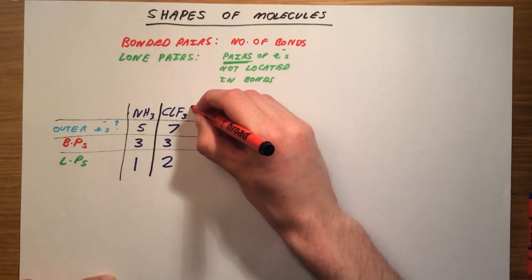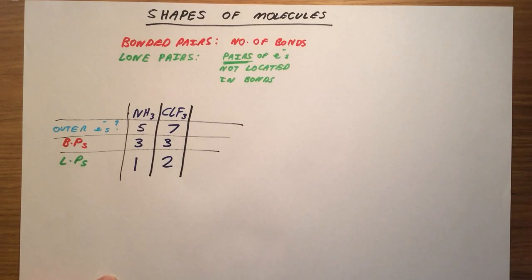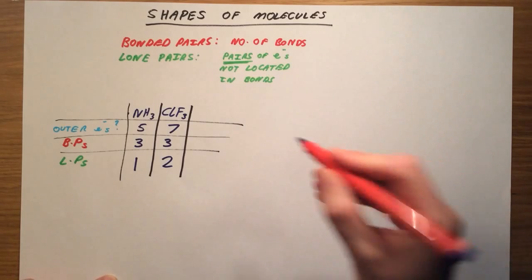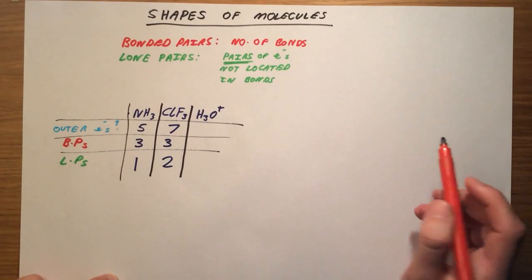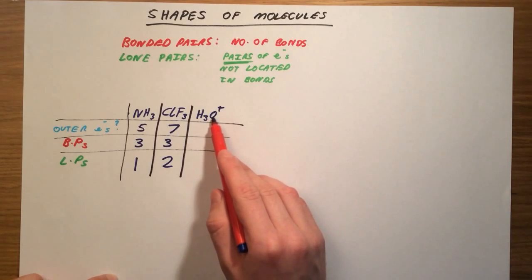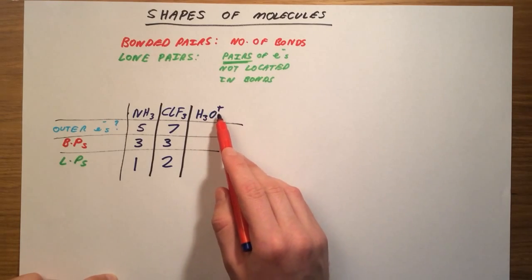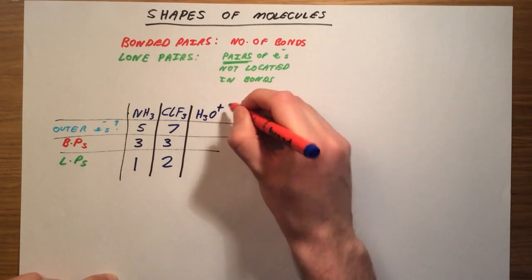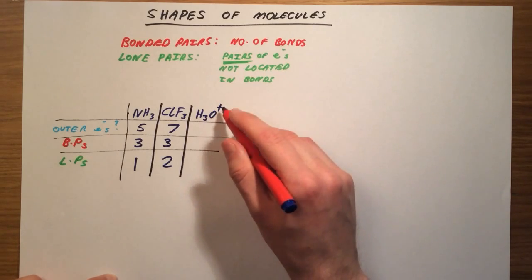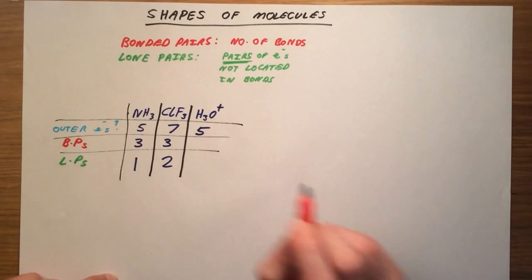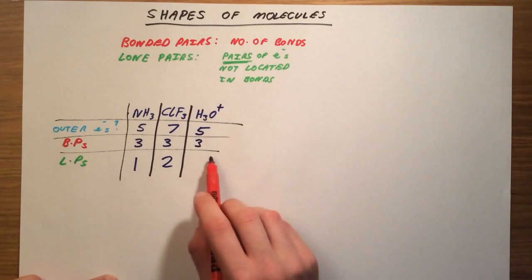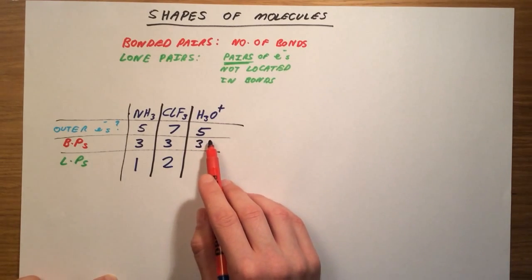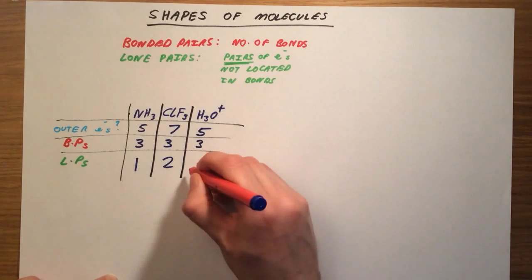We can also do this for charged molecules. Let's use the example of H3O+. When we come across a charged molecule, we take the group number of the central atom — in this case oxygen, which is 6. The molecule has a positive charge, meaning we've lost 1 electron, so we take 6 and subtract 1, giving 5 outer electrons about the oxygen. We have 3 bonds to hydrogen, so 3 bonded pairs. That leaves 2 electrons not in covalent bonds, giving us 1 lone pair.